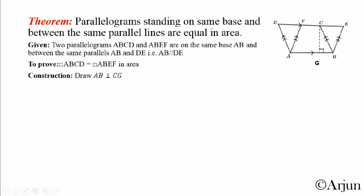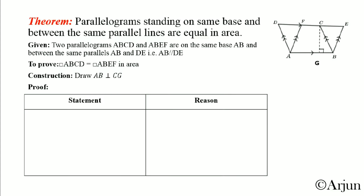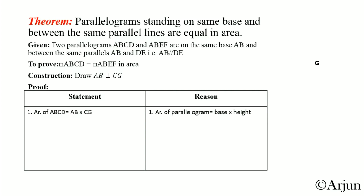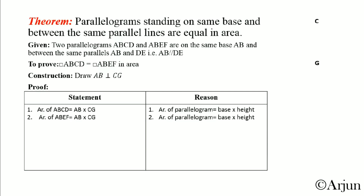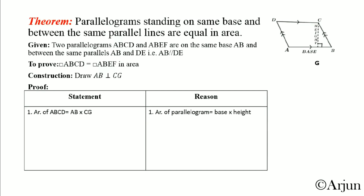For our construction, we draw AB perpendicular to CD — that is, this AB line is perpendicular with CD. This is our construction. Now let's start our proof. Here is the table for proof with statement and reason.